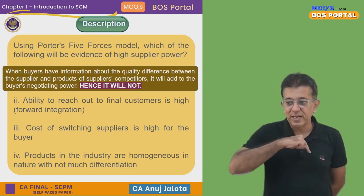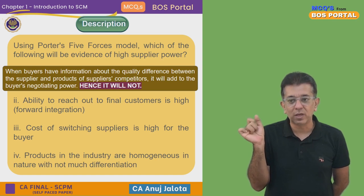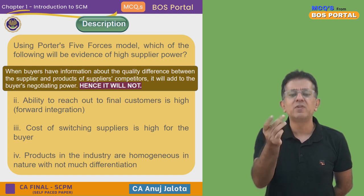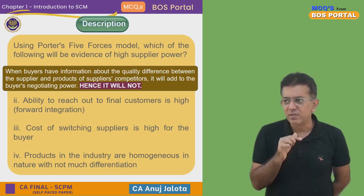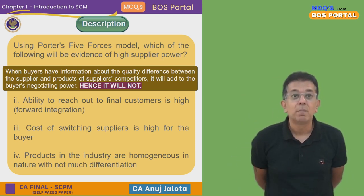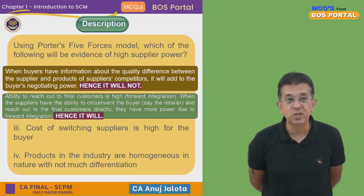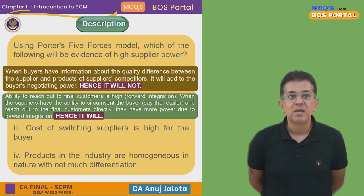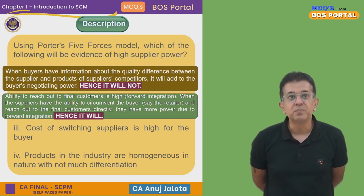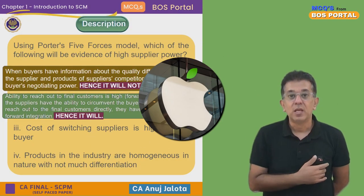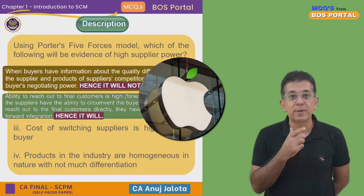When buyers have information about the quality difference between suppliers and their competitors' products, it adds to the buyer's negotiating power, not the supplier's bargaining power. Option two: ability to reach out to the final customers is high — this is called forward integration. If the supplier can directly bypass us and reach the consumer, he has very high bargaining power. If you try to negotiate, he will say he will sell directly to the final customer.